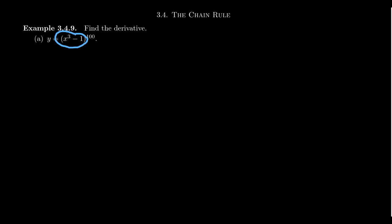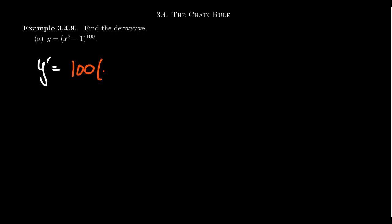Let's take a look at the derivative of y equals x cubed minus 1 to the 100th power. The inner function is x cubed minus 1, and this sits inside of the power function x to the 100th power. You often see this when working with these functions — the inner function is set apart by parentheses. If you see parentheses in your function notation, the things inside the parentheses we should visualize as an inner function. When we calculate the derivative y prime, we take the derivative of the outer function. By the power rule, that gives us 100 times x cubed minus 1 to the 99th power.